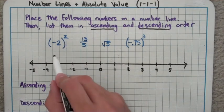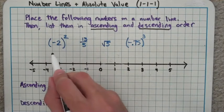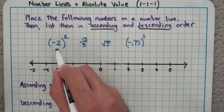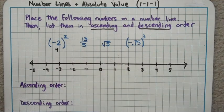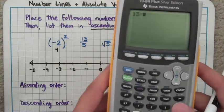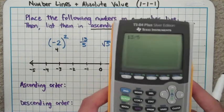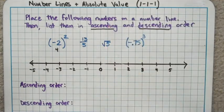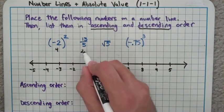So negative 2 squared means negative 2 times negative 2. That's a positive 4, so I'm going to write down a little 4 right here so I know what that's actually equal to. 13 divided by 5, if I knew the answer off the top of my head I could do that. Otherwise, I can just pull up my calculator. 13 divided by 5 is going to give me 2.6, so this guy right here is equal to 2.6.